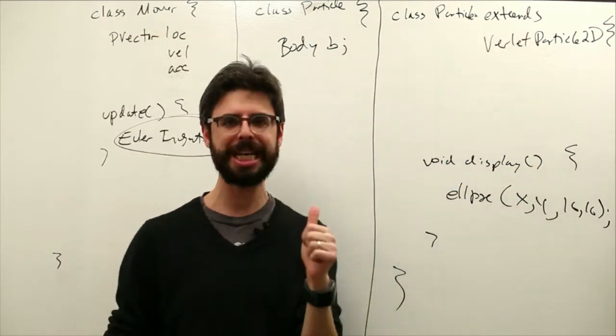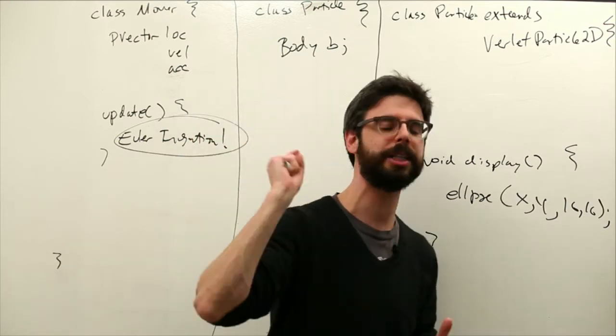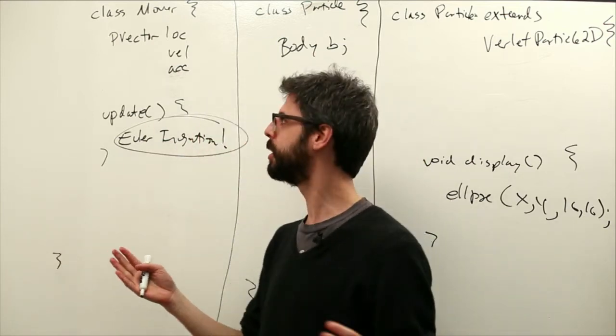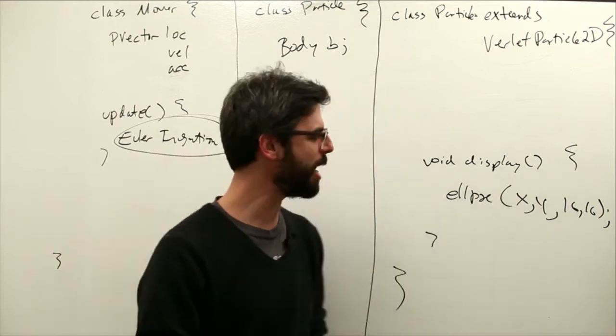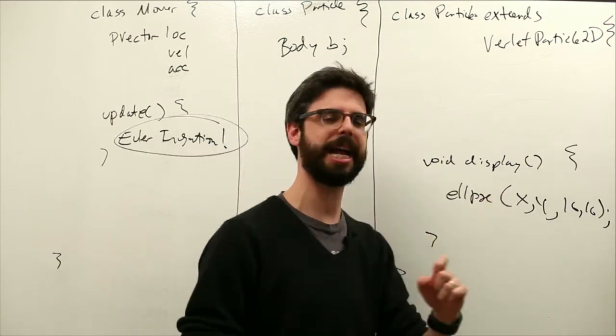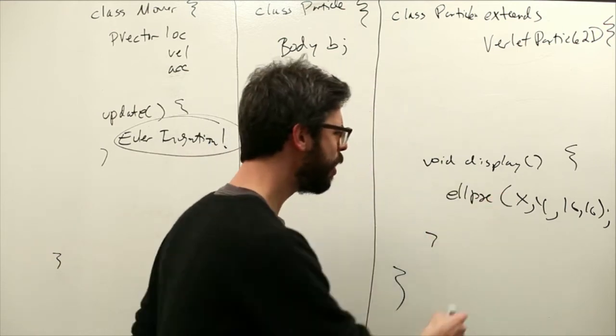So shouldn't maybe particle, verlet particle, have a vec2d, right? If vec2d is the object in toxic libs, it should have a vec2d position, and we should be saying ellipse at position.x, position.y. But instead, we have x and y.